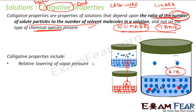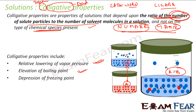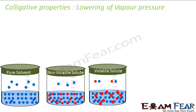Some of the colligative properties we will study include: relative lowering of vapor pressure — when you add solute to a pure solvent, the vapor pressure of the resulting solution decreases; elevation of boiling point — the boiling point increases when solute is added to a pure solvent; depression of freezing point — the freezing point decreases when solute is added; and osmotic pressure. Let's start with the first colligative property: lowering of vapor pressure.